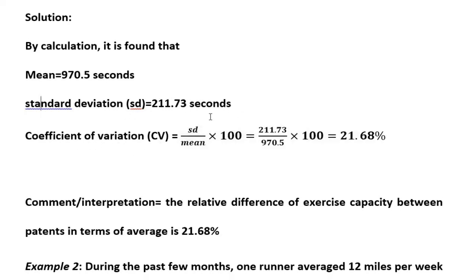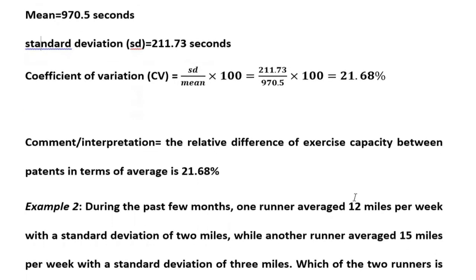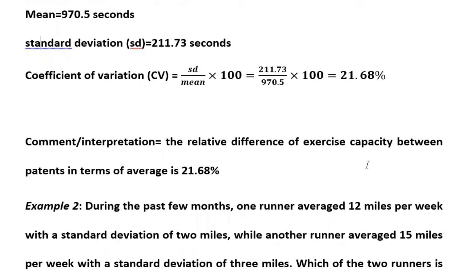Using those values, the coefficient of variation for this data is 21.68%. What does this mean? The relative difference of the exercise capacity of the patients in terms of the average is 21.68%. In other words, the relative difference of the data relative to the mean is 21.68%. This becomes more interesting when we compare two groups, because then we can determine which group is more similar or more consistent.